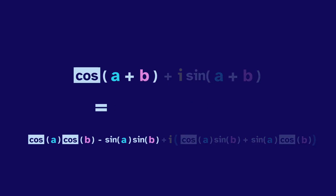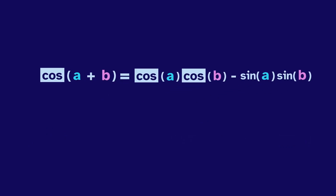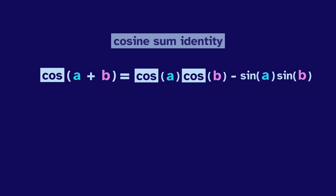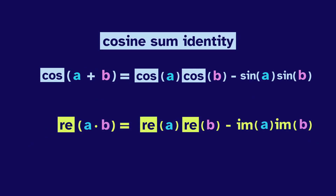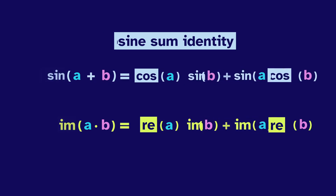So if you're ever in the middle of a test or trying to solve a riddle for a quest, just remember that the cosine identity looks like a real result from complex multiplication, and the sine identity looks like an imaginary result.